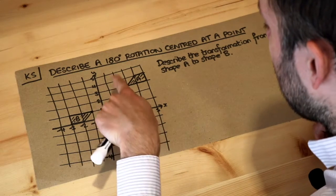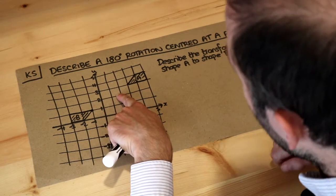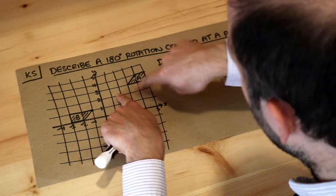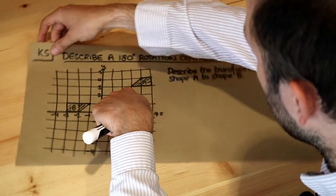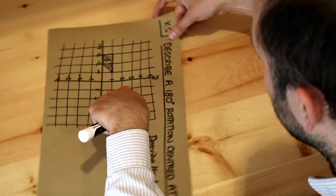For example, I could put my finger here as the center of rotation, then if I was to spin shape A around this point where my finger is, I could rotate the paper so that the shape rotates around.